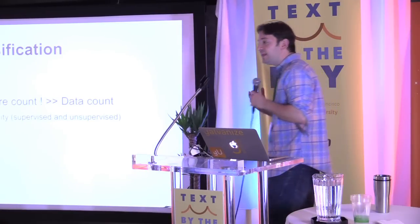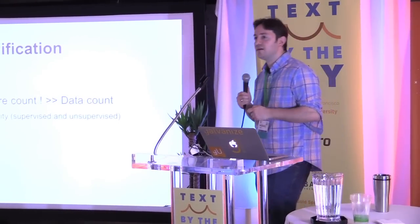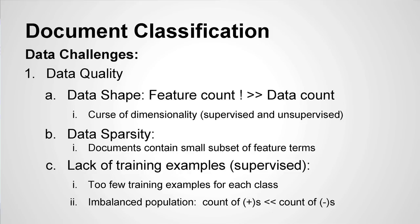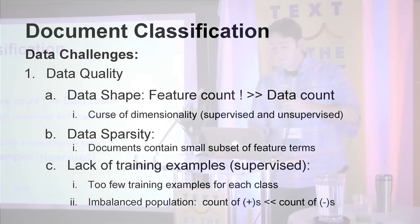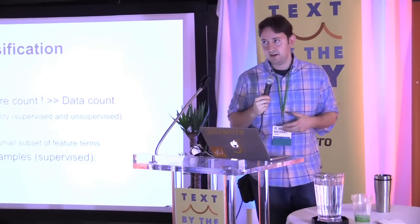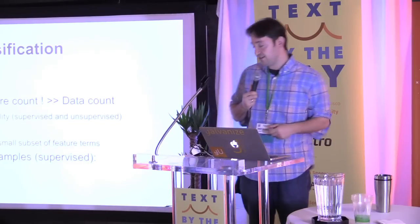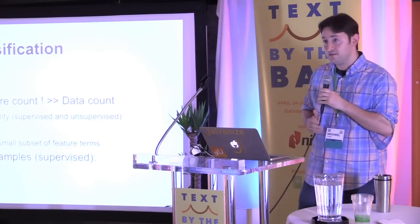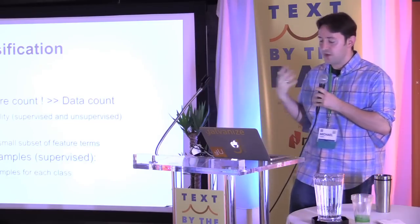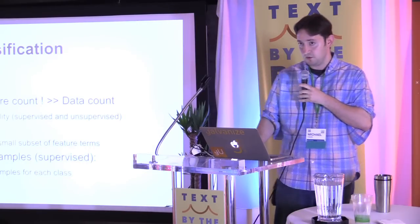You also have data sparsity. Not every document is going to have even a fraction of the total number of terms in your vocabulary. So you deal with a bunch of zeros and only a couple of ones in your rows — that's going to have all the effects and challenges of a sparse feature set. And then there's lack of training examples. If you want to train for nodes in your taxonomy that are, say, hundreds or thousands of nodes wide, you're going to need training examples for each of those nodes in a supervised context, and that can be very challenging.